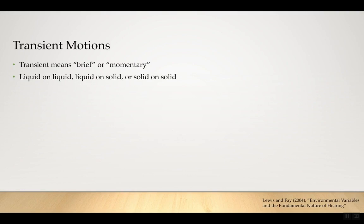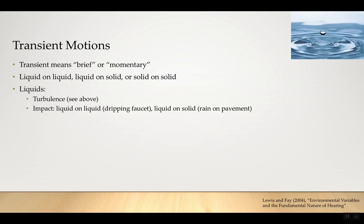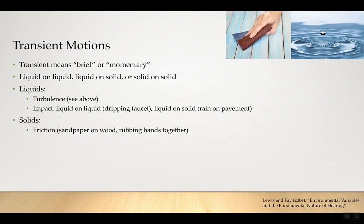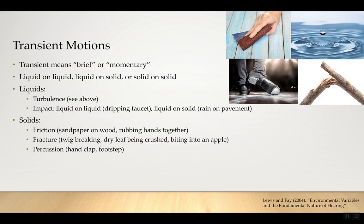Transient motions — transient just means brief or momentary. Examples include a liquid dropping on a liquid, liquid on a solid, and solid on solid. Impact sounds like a dripping faucet or rain on pavement are transient. Solid rubbing against solid is friction — rubbing your hands together. Fracture is something breaking: a twig breaking, crushing a dry leaf, biting into an apple.